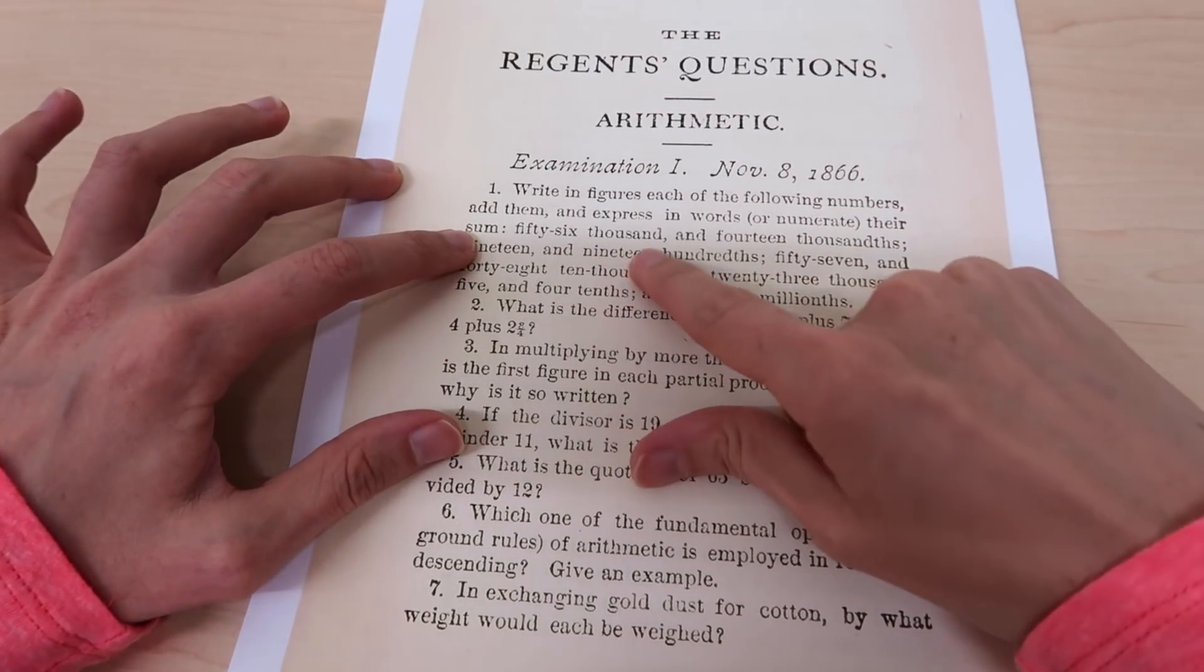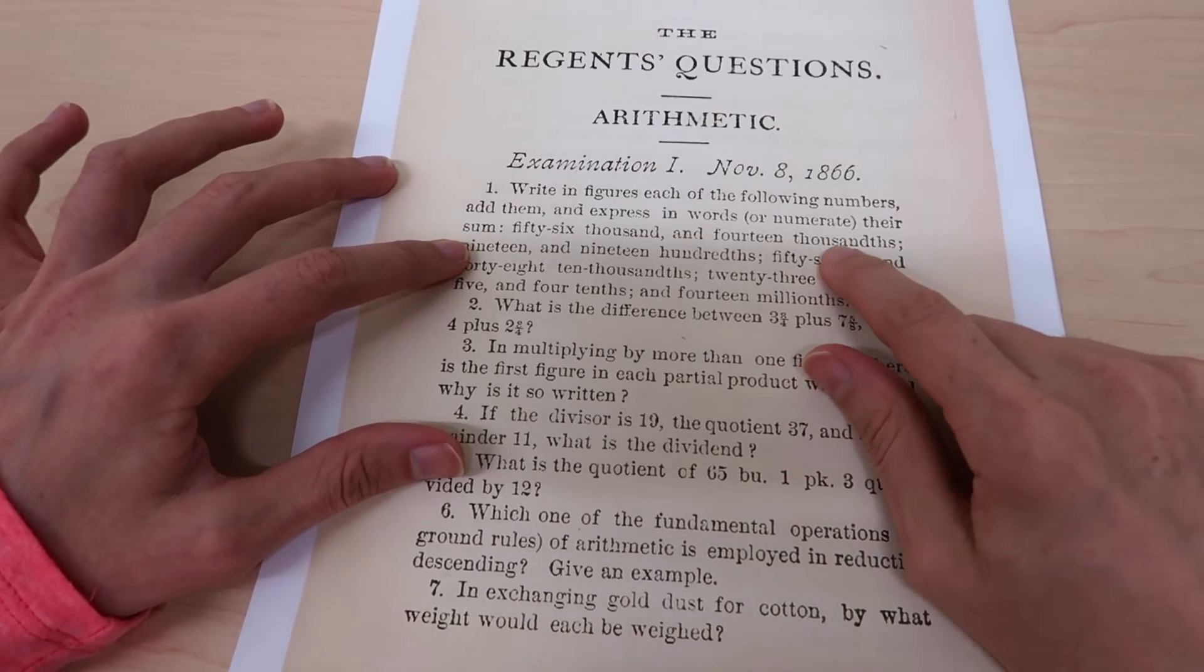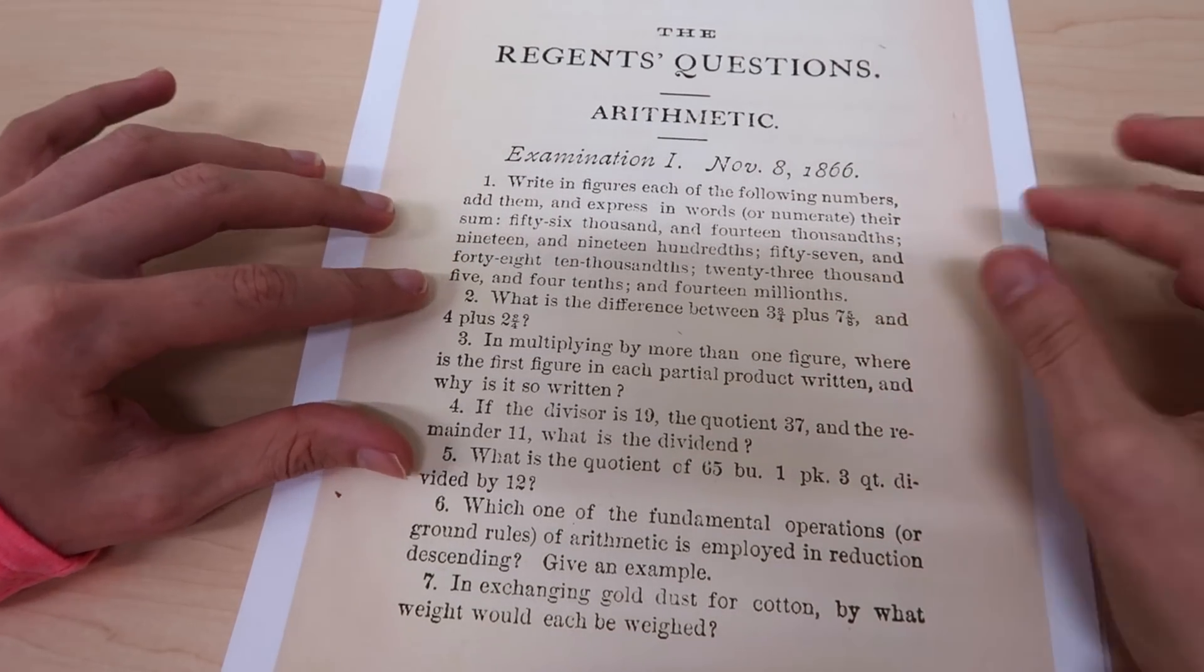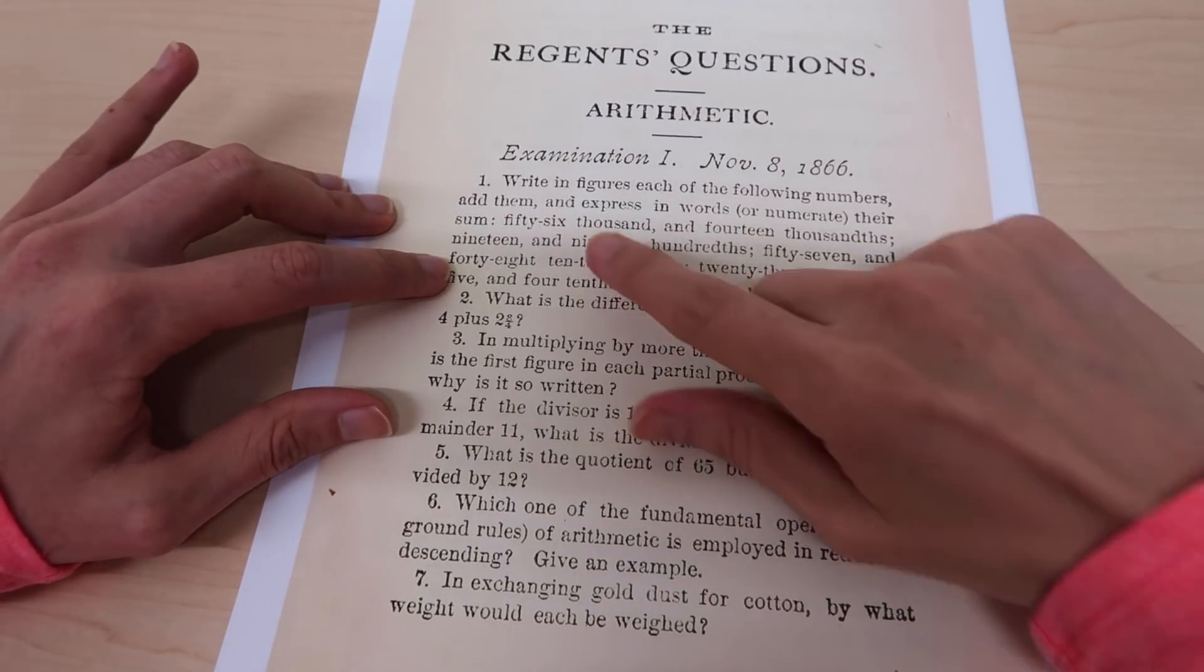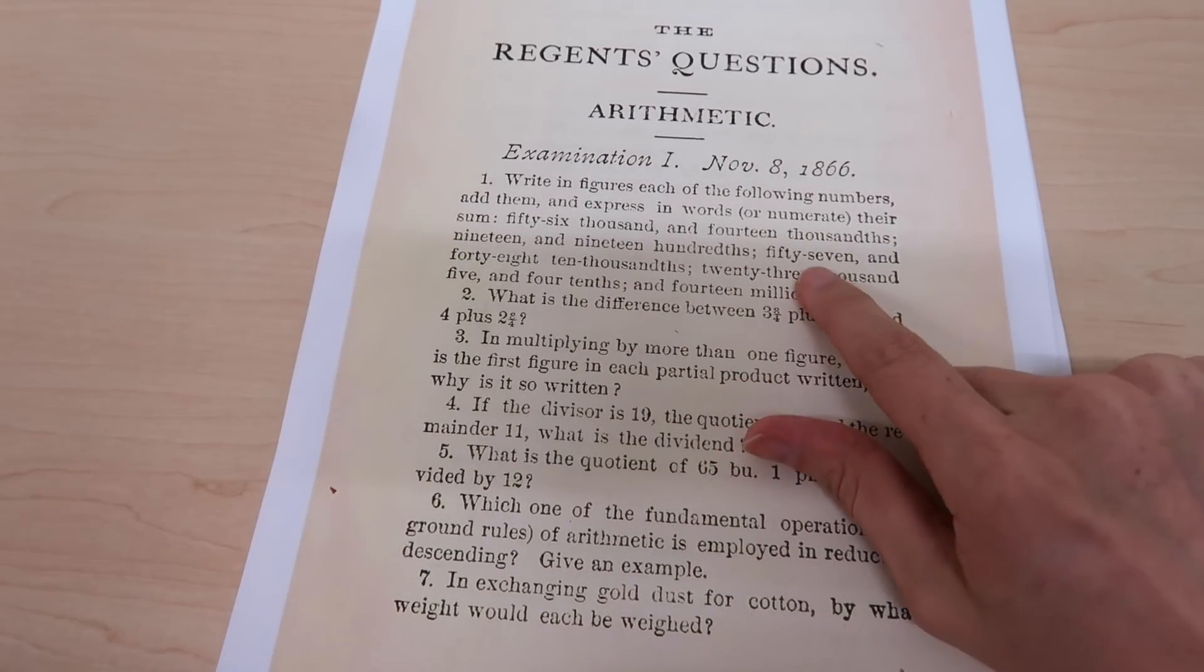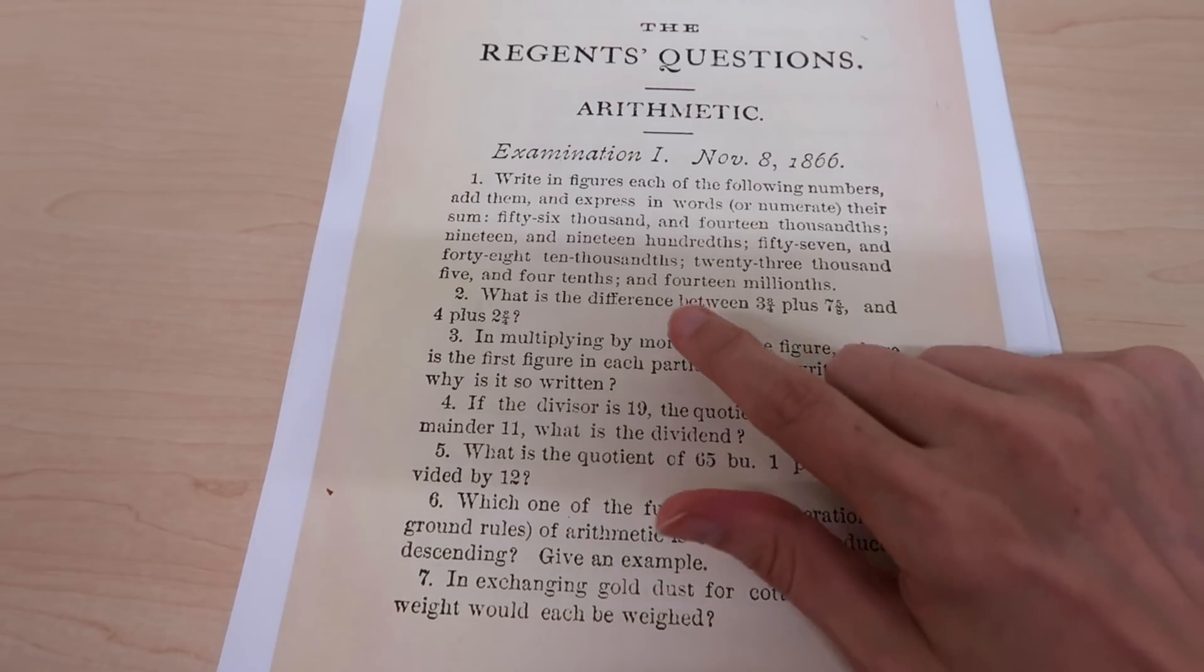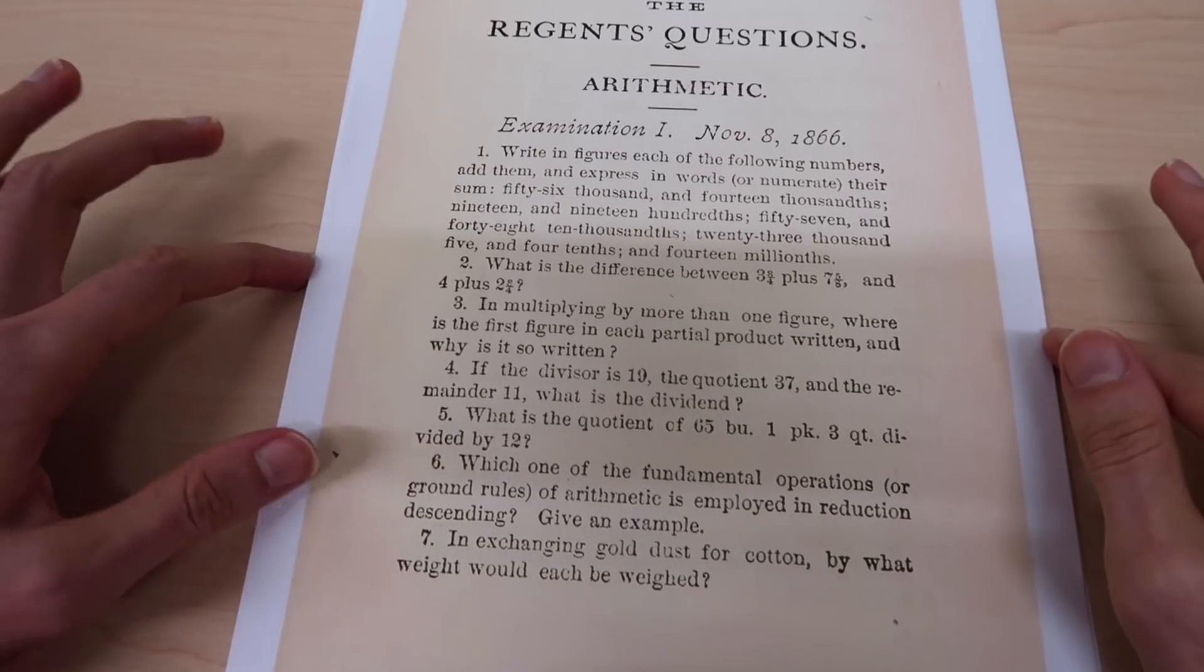They've given us 56,000 and 14 thousandths, so I guess they're talking about the places after the decimal point here, so you would have like your tenths, hundredths, thousandths and tens of thousands digits so the numbers are a little bit trickier. We've got 19 and 19 hundredths, 57 and 48 ten thousandths, 23,005 and four tenths and 14 millionths. So a little bit tricky but I think it's still all right.